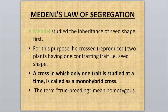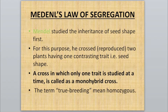Before studying Mendel's Law of Segregation, one important term is 'true breeding.' True breeding refers to a homozygous genotype in which both alleles are the same. Mendel studied the inheritance of seed shape and for this purpose he crossed two plants having one contrasting trait — that is seed shape — which is called a monohybrid cross.